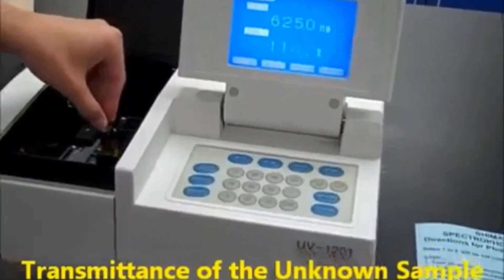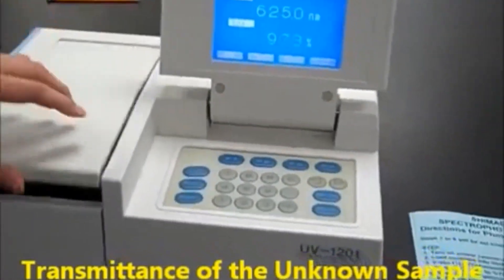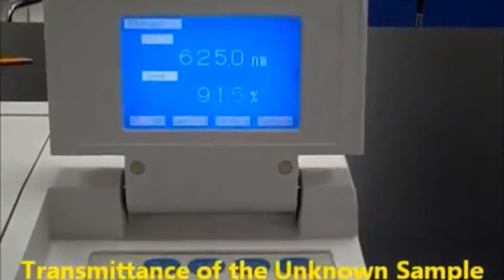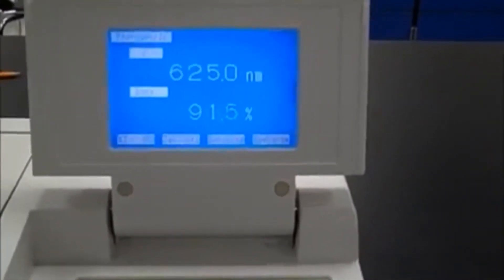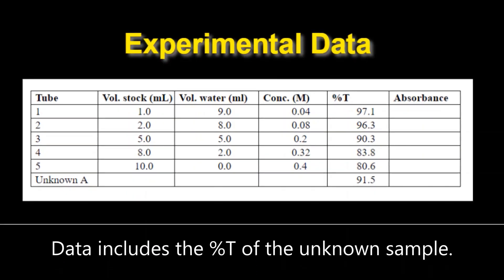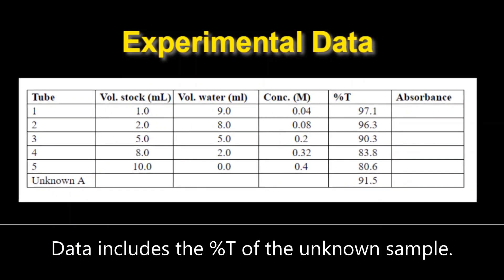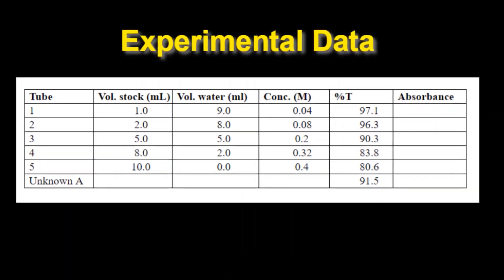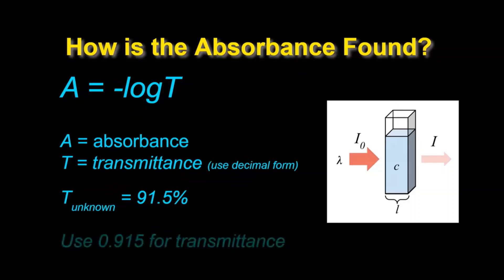To best determine its concentration though we want to measure its transmittance. So we see that being measured here looks like to be about 91.5 percent. Now we see that that data has been added into the table. Again a transmittance of 91.5 percent for the unknown sample.